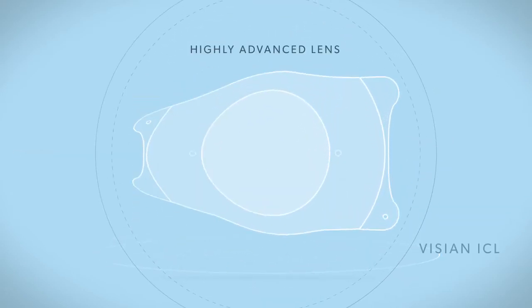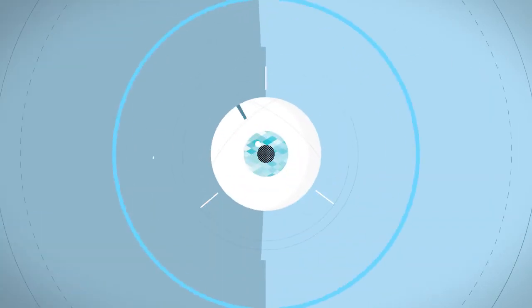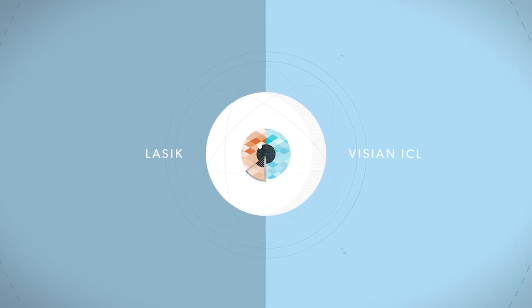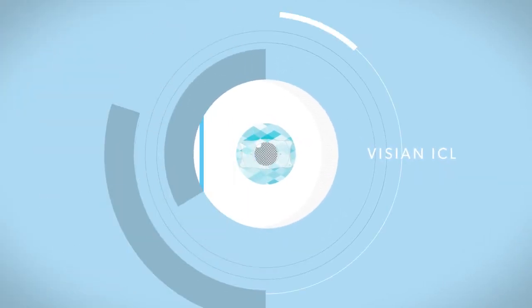The Visian ICL is a highly advanced lens that's gently placed in the eye for maximum comfort and lasting results. And unlike LASIK, which removes eye tissue, the Visian ICL procedure is additive, requiring nothing to be removed.